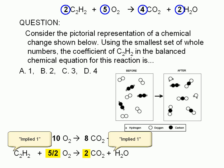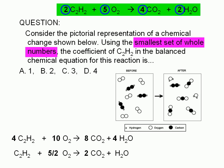This question is specifically asking for the coefficient of C2H2 in the equation with the smallest set of whole number coefficients. The coefficients 2, 5, 4, and 2 are the smallest set of whole number coefficients. Why? Because their greatest common factor is 1. There is no number that you can use to divide all four coefficients to get a set of smaller whole numbers.